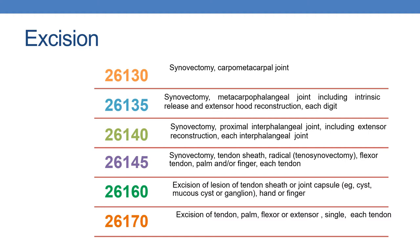The next is 26130: synovectomy, carpometacarpal joint. The next is 26135: synovectomy, metacarpophalangeal joint, including intrinsic release and extensor hood reconstruction, each digit. The next is 26140: synovectomy, proximal interphalangeal joint, including extensor reconstruction, each finger joint. The next is 26145: synovectomy, tendon sheath, radical, flexor tendon, palm or finger, each tendon.